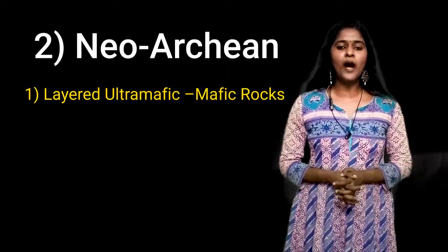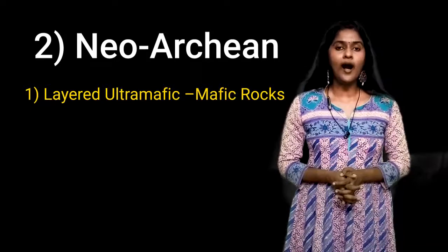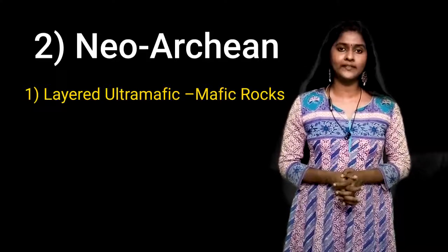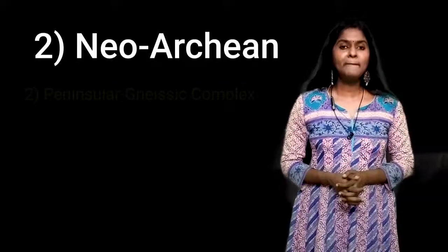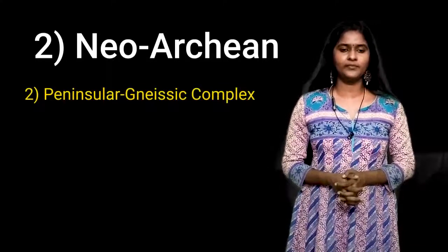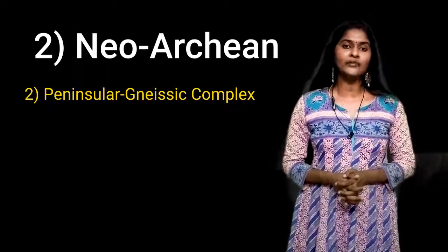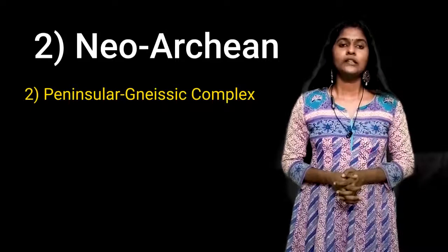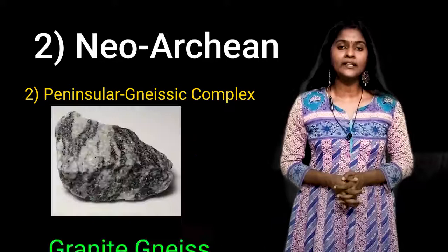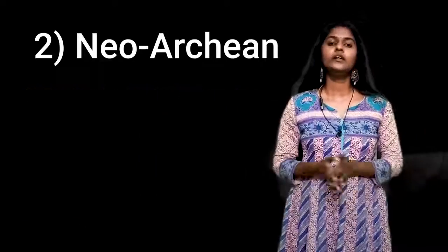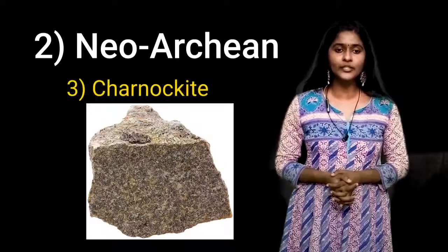The occurrence of mafic and ultramafic rocks represents remnants of Archean oceanic crust. The second category includes Peninsular Gneiss Complex. It is mainly exposed in Kannur and Wyanad districts. It mainly consists of hornblende gneiss, hornblende-biotite gneiss and biotite gneiss.